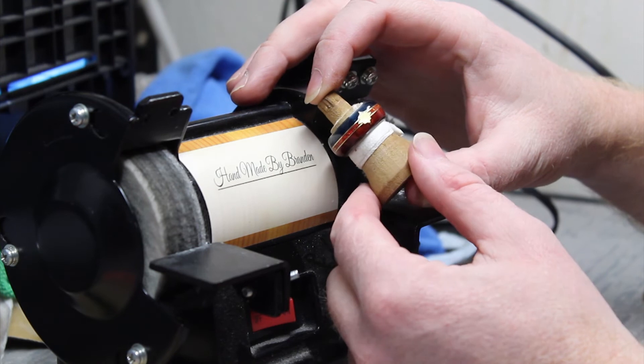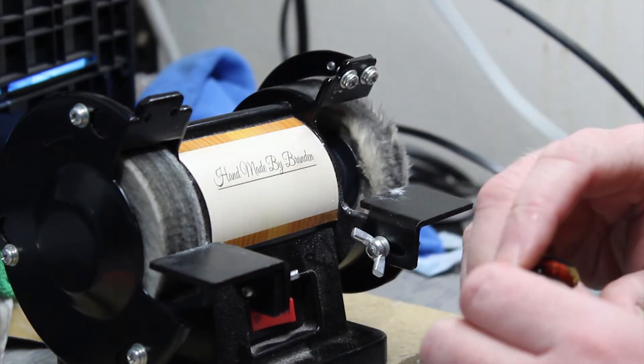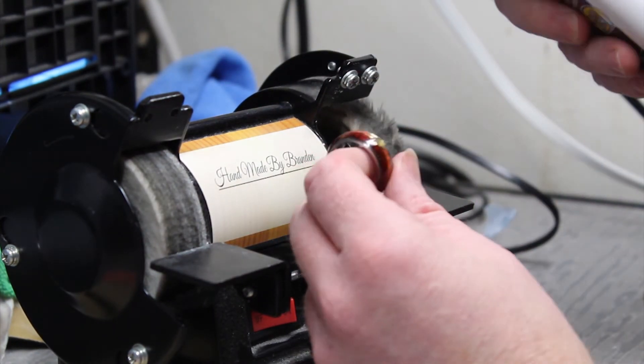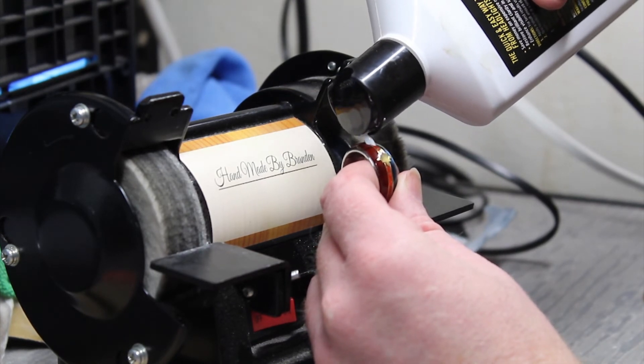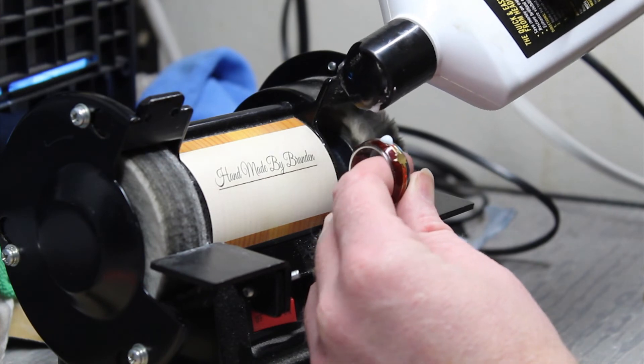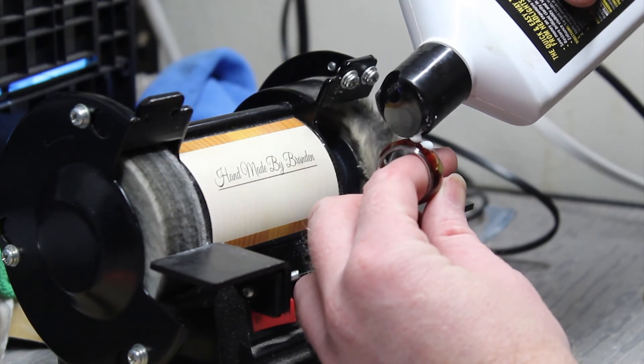I use this Meguiar's plastic polish for the final buff. You can find it at auto parts stores or big box stores. It's used to polish headlights.